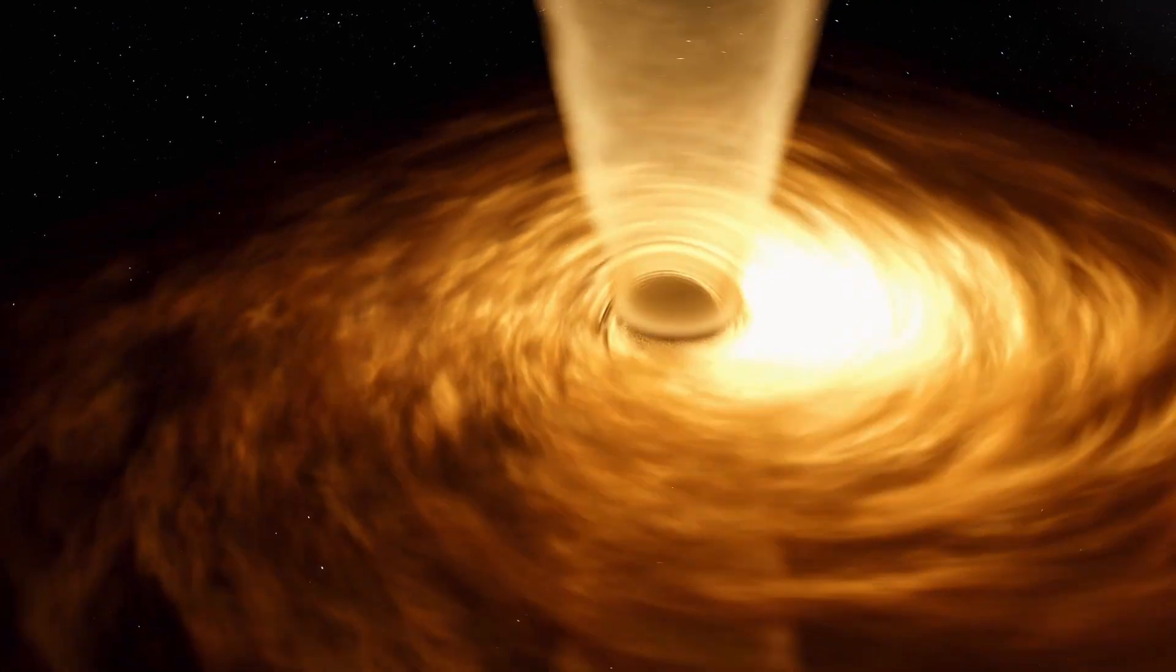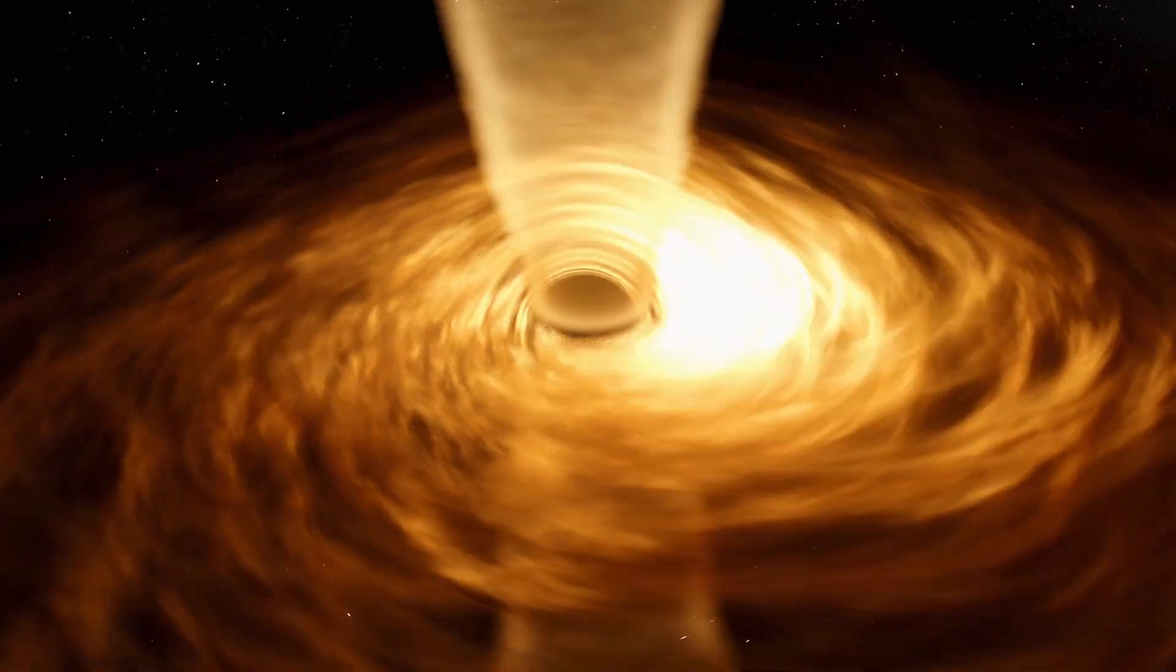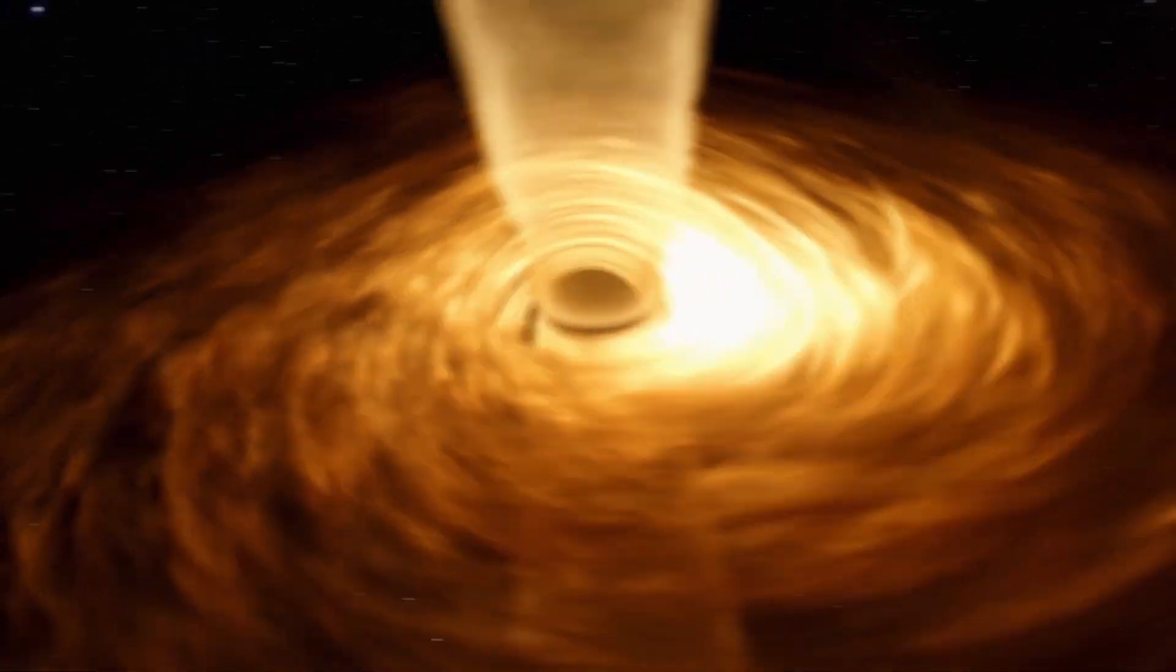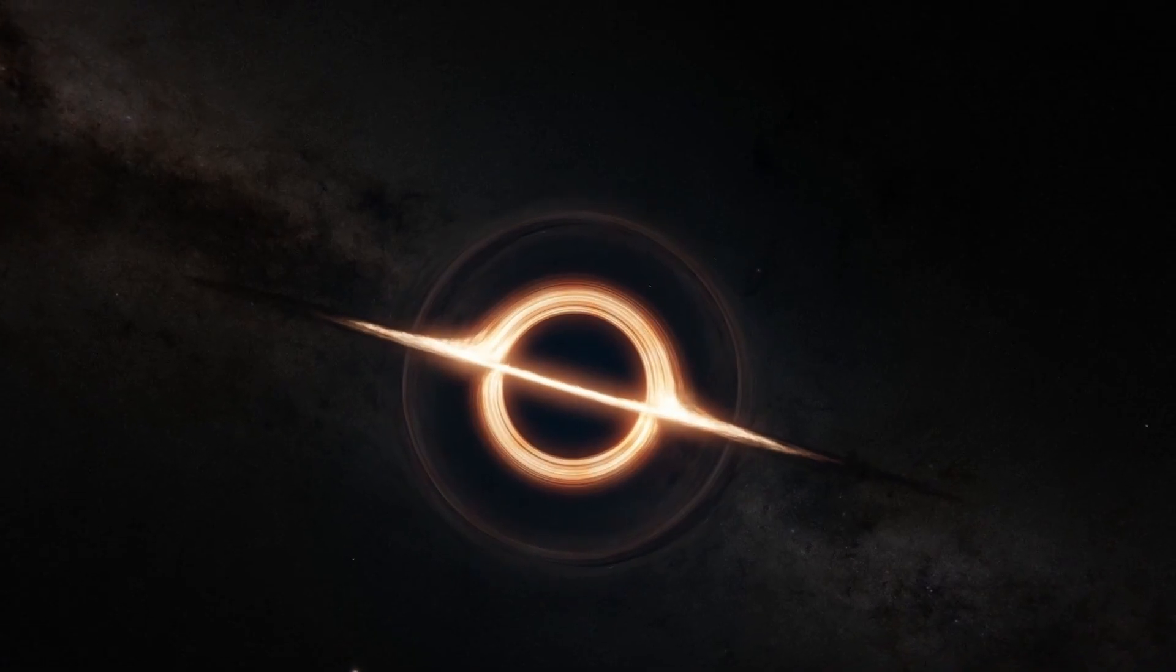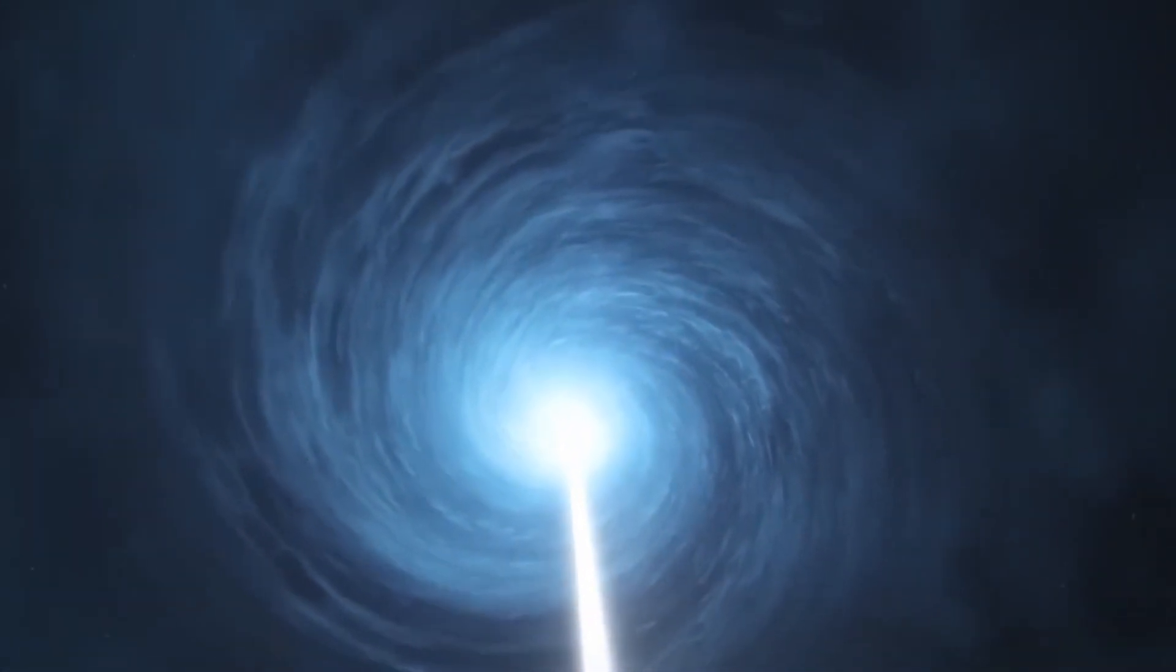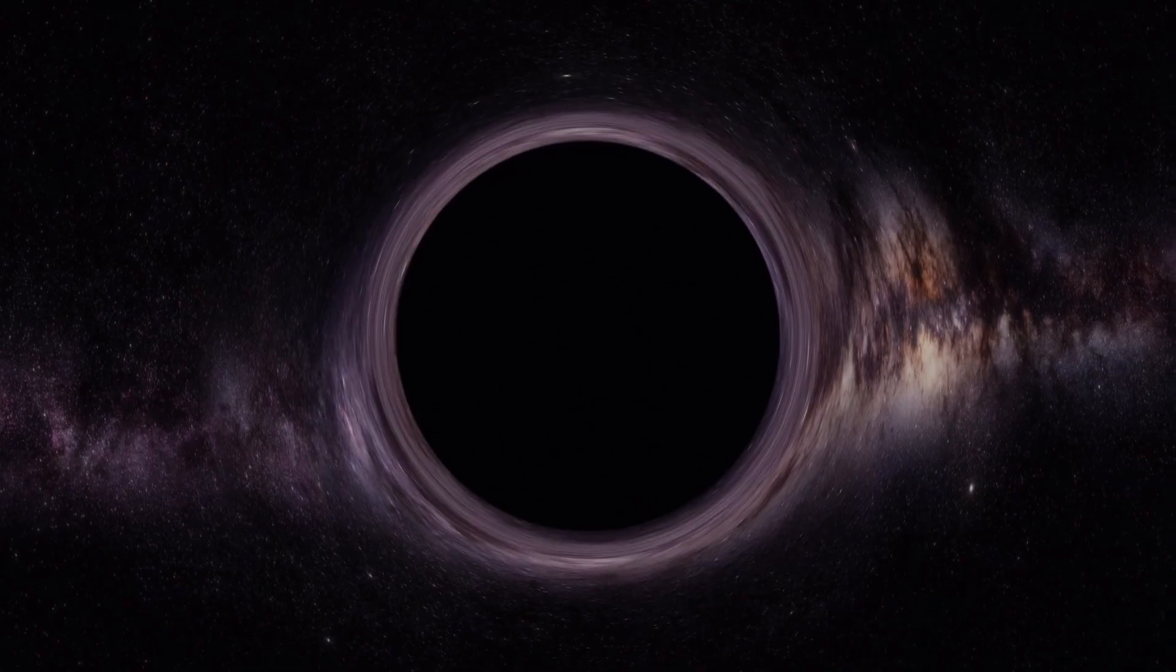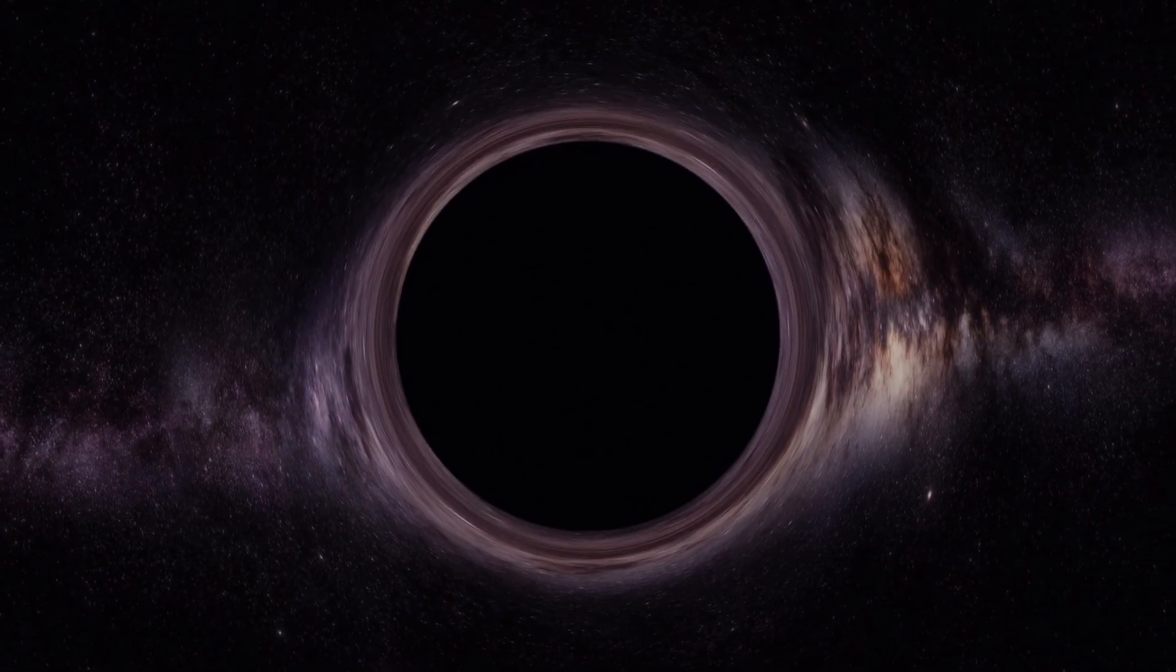When a black hole reaches about 1 million kilograms, it'll have only one more minute to live. One possible way to directly observe Hawking radiation is to detect gamma ray flashes, which are traces of the last moments of small, primordial black holes with masses of the order of 210 billion kilograms, formed soon after the Big Bang.